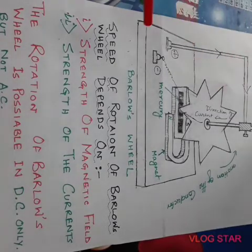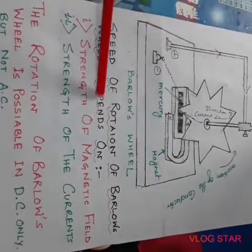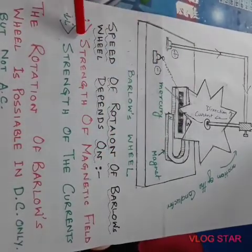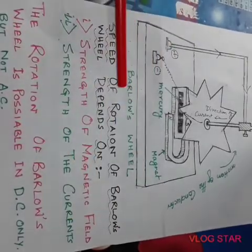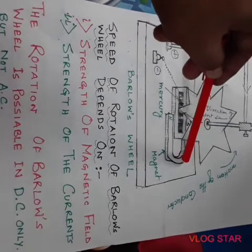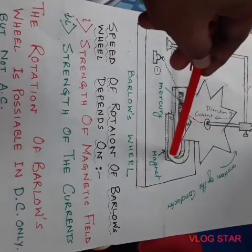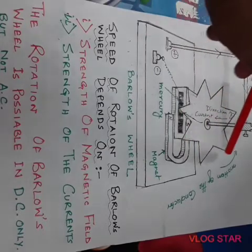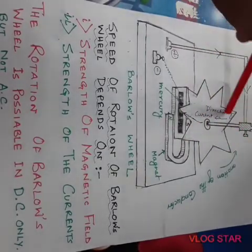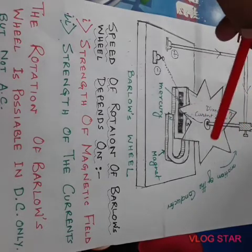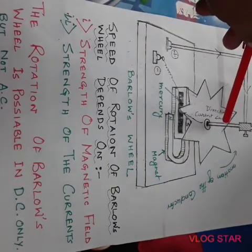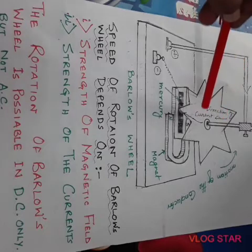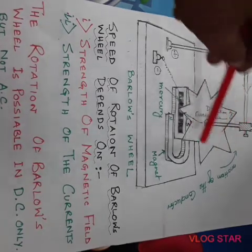One thing we have to know is that the speed of rotation depends on two factors: the strength of the magnetic field and the strength of the current. If the bar magnet is strong, the speed of rotation will be more. And if the strength of current is more, the speed of the wheel will also be fast.